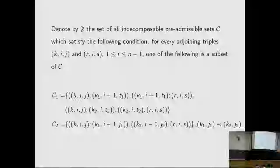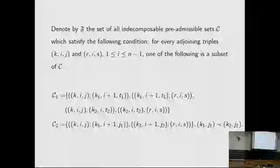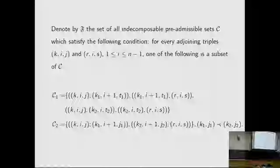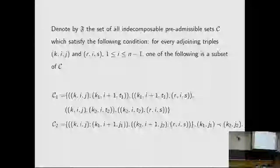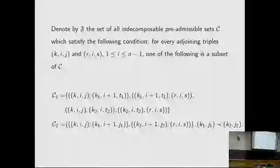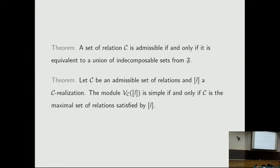We define F to be the set of all indecomposable pre-admissible sets C which satisfy the following condition: for every adjoining triple, one of the specified subsets is a subset of C, and for every adjoining pair, one of the specified sets is a subset of C. A set of relations C is admissible if and only if it is equivalent to a union of indecomposable sets from F. This fully describes all admissible sets of relations.